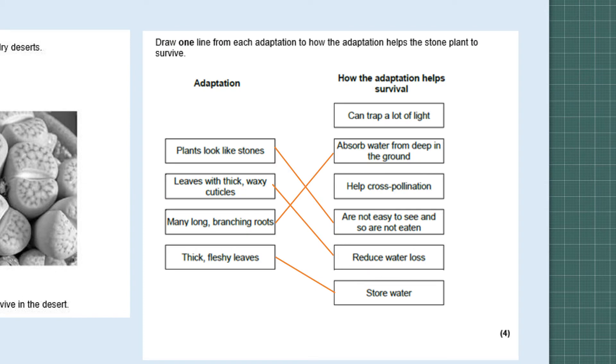Okay so here are the answers. The first thing I want you to think about is hopefully you got them right, but it's just a matter of going through the list. For example, the first one says plants look like stones. Can trap a lot of light? Nothing to do with looking like a stone. Absorbs water from deep in the ground? Not about looking like a stone. Helps cross pollination? Nope. Are not easy to see and so are not eaten? If it looks like a stone it's going to be camouflaged so that must be the correct answer. It's a matter of deduction. If you can't get the answer then take a guess, and probably what I would do is just answer the ones you can and then you'll have two or three that might be free and just go through and use your common sense.